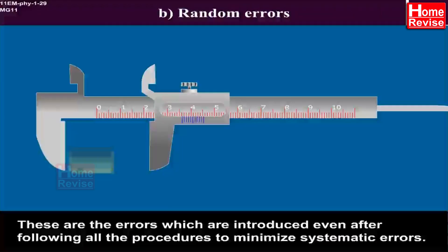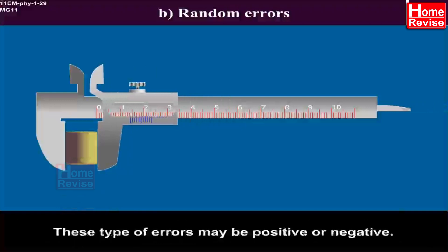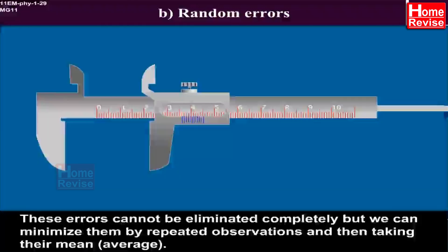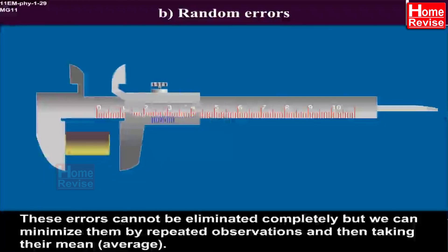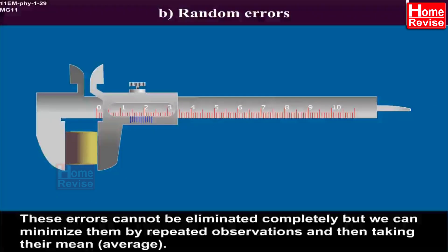Random errors. These are the errors which are introduced even after following all the procedures to minimize systematic errors. These type of errors may be positive or negative. These errors cannot be eliminated completely, but we can minimize them by repeated observations and then taking their mean,